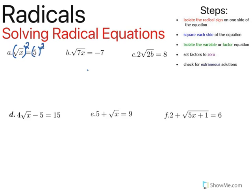Remember that a square undoes a square root, so once we square both sides, the radical sign is going to go away, and we're going to be left with what is on the inside, which is x. And five squared is twenty-five. So when we solve this equation, we get x equals twenty-five.